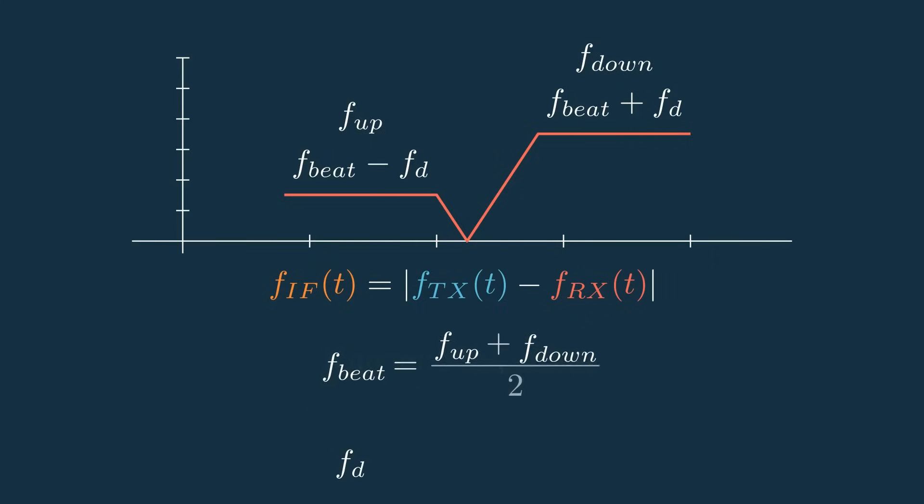We can then simply sum fup and fdown and divide by 2 to get the beat frequency, and then we can also subtract fup from fdown and divide by 2 to get the Doppler frequency. All we have to do is wait for a full period of this triangular function to get enough information.